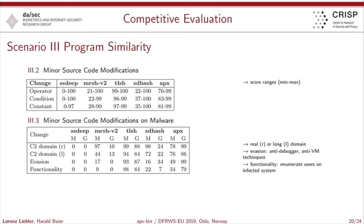For minor source code modifications on malware, SSDeep falls down to 0, as seen in previous evaluations. TLSH has quite solid results. SDHash and APXPIN could also compete with TLSH in those scenarios. However, as soon as you introduce new functionality to the malware source code, APXPIN starts to struggle because the code base begins to heavily differ.